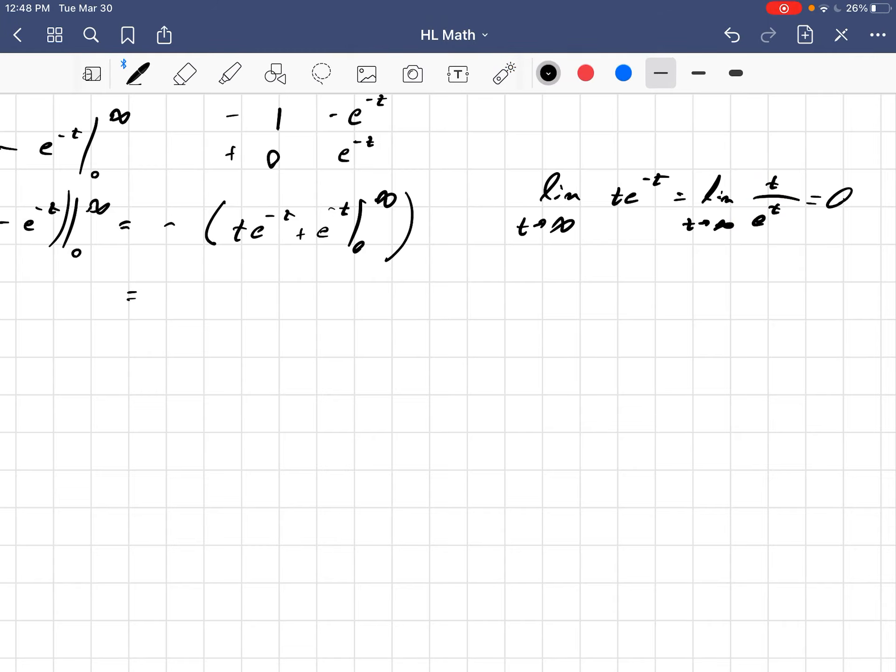You could show that more formally with L'Hopital's rule. So, we get negative of 0 plus, e to the minus t at infinity is 1 over e to the positive infinity, which is 0 again. Minus t e to the minus t at t equals 0 is still 0. e to the negative t at t equals 0, that's e to the negative 0, which is a 1. So, we get just minus minus 1, which is 1.